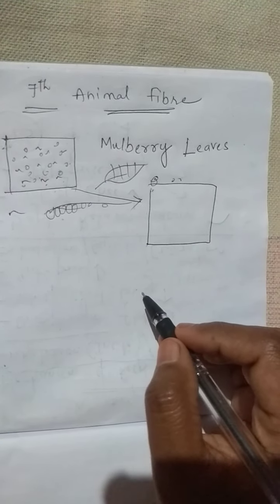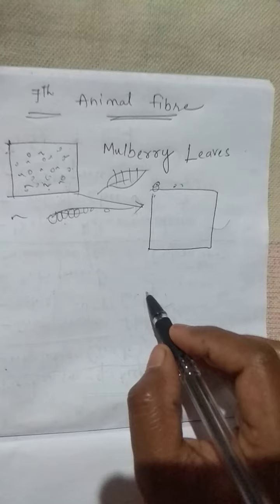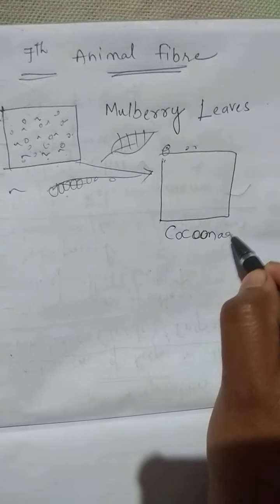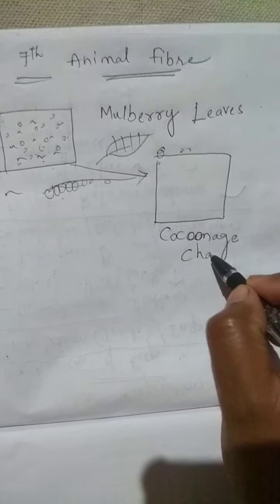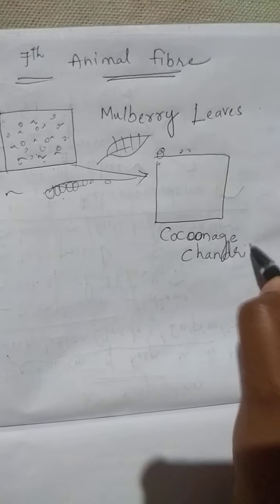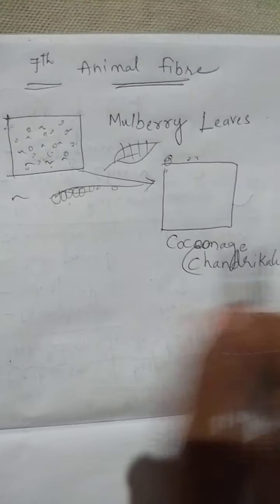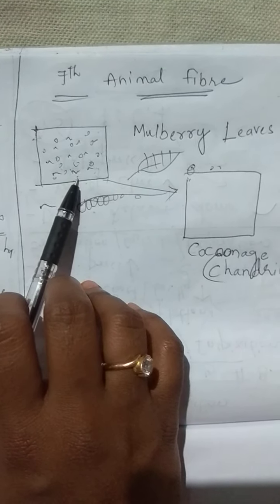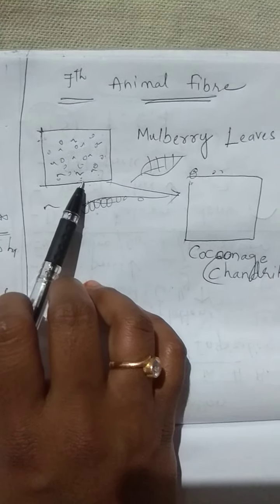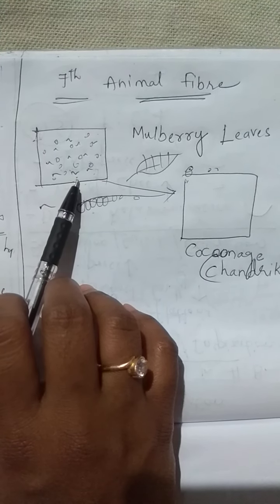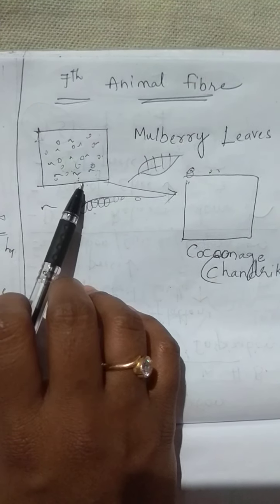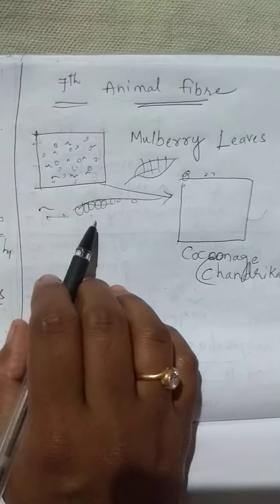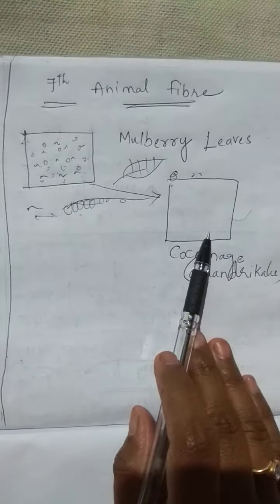This big size frame has a special name called Chandriku. The little caterpillars came from the egg. We cut the leaves into small pieces and feed the caterpillars. This caterpillar became a big caterpillar, and after it grew big, we shifted it into a big frame.